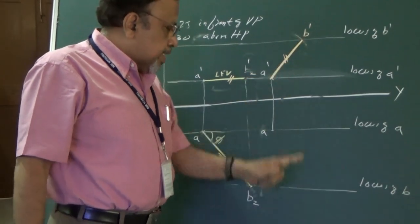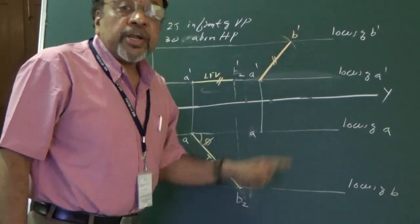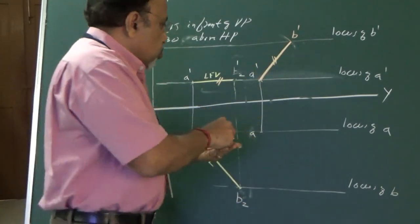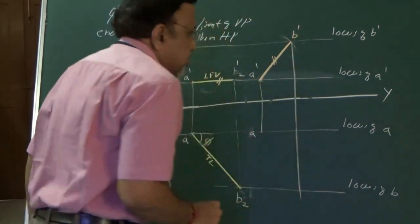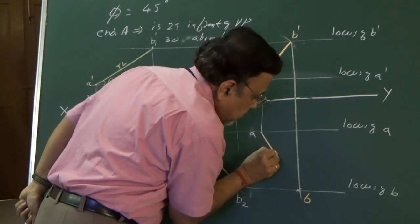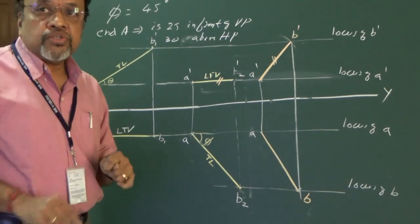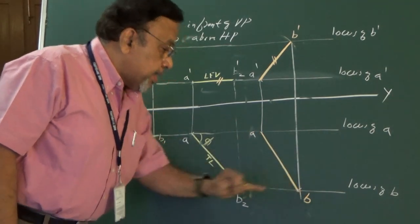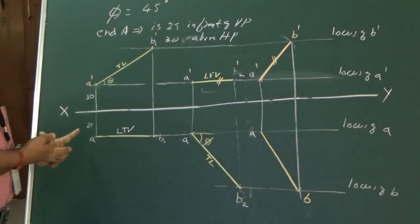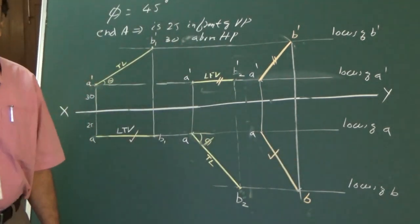Now I know B dash location. Since B and B dash must be on the same projector, I draw a projector through B dash down to intersect the locus of B in the top view, giving me point B. Joining A to B gives the final top view. To verify the solution: this length in the top view should equal LTV. If the problem is done correctly, this length should be the same as LTV from Stage 1.